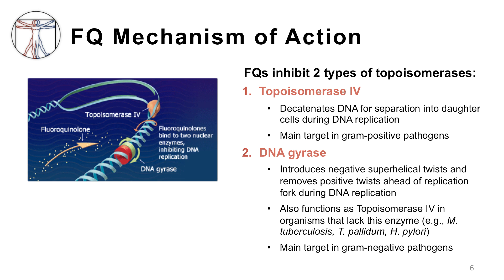Interestingly, DNA gyrase also functions as topoisomerase IV in organisms that lack this particular enzyme, such as Mycobacterium tuberculosis, Treponema pallidum — the cause of syphilis — and Helicobacter pylori.